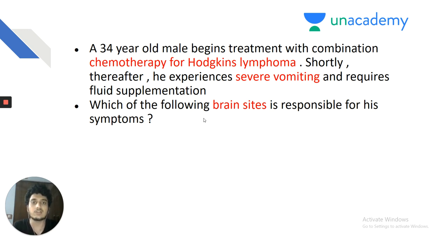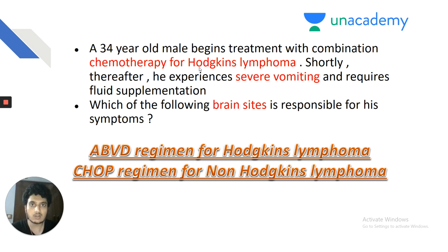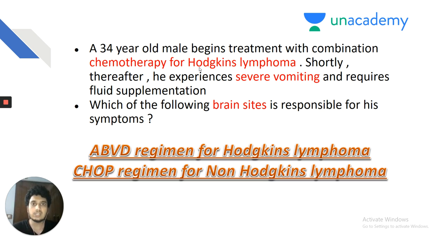It is the ABVD regimen which is the treatment protocol for Hodgkin's lymphoma, and it is the CHOP regimen which is the treatment protocol for non-Hodgkin's lymphoma. You cannot just leave this topic — whenever you see Hodgkin's lymphoma, go back to your pathology notes and read about it. Integration between subjects is the key to success in any competitive exam.